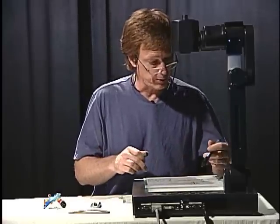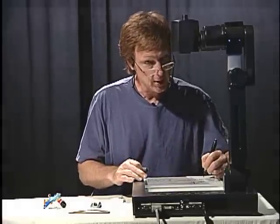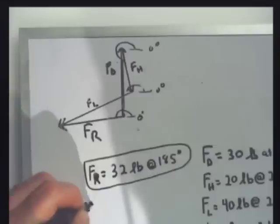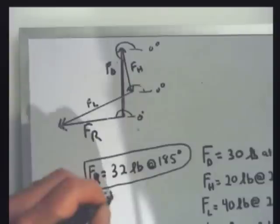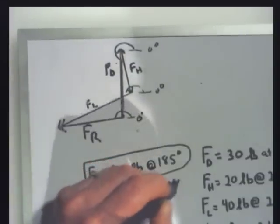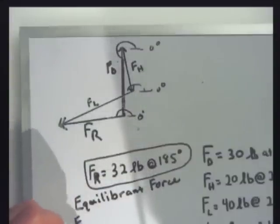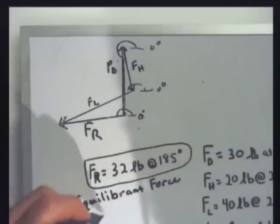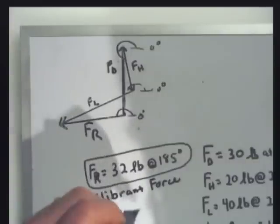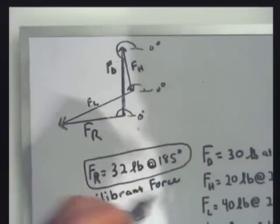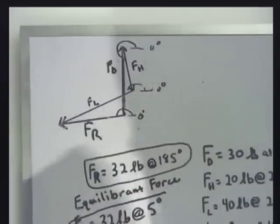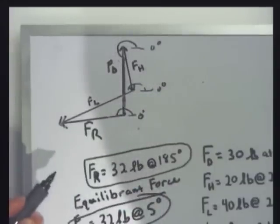So this is called the equilibrium force. So if the resultant force is 32 pounds, then the equilibrant force, E-Q-U-I-L-I-B-R-A-N-T force, is given by F and then a subscript EQ. That's going to be 32 pounds, the same actual magnitude, 180 degrees different. So it'll be at, let's see, 185 minus 180 would be 5 degrees. And that's how you do the head to tail method of vector addition.